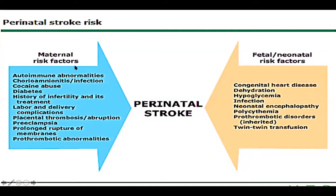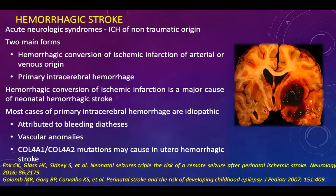The risk factors can be seen in both maternal and neonatal categories. Maternal risk factors include autoimmune problems, history of infertility, and prothrombotic abnormalities. Important fetal and neonatal risk factors are congenital heart disease, dehydration, hypoglycemia, infection, encephalopathy, and polycythemia, along with prothrombotic disorders.